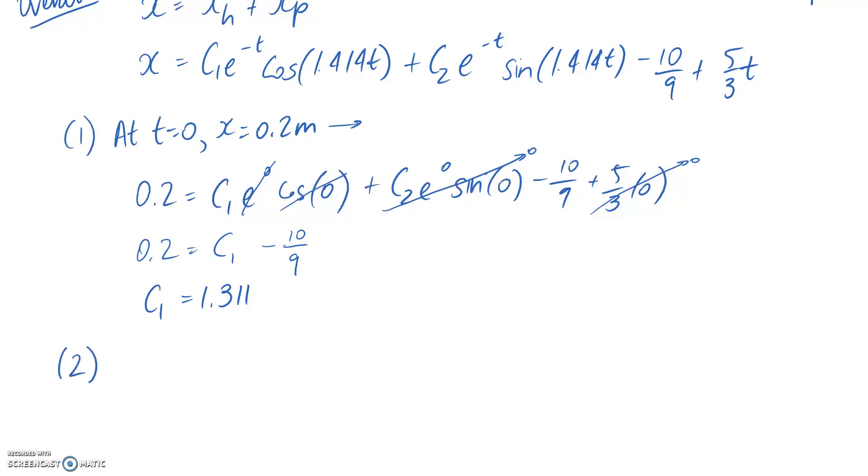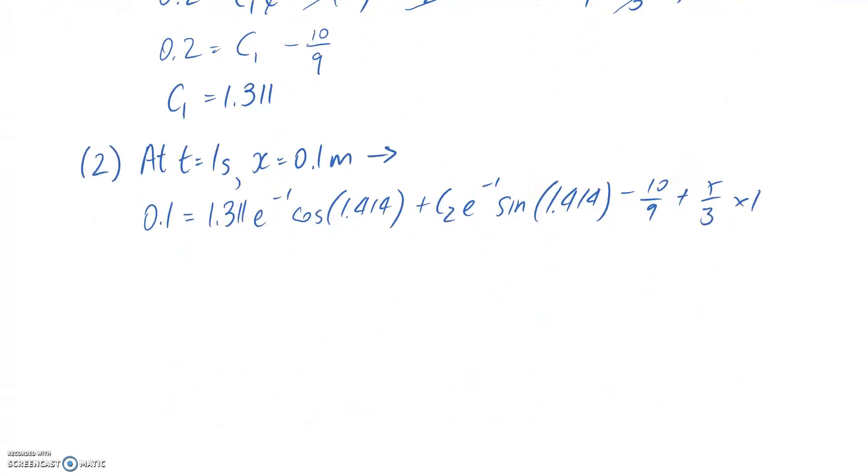And then in order to get our other constant c2, we're going to need to use our second condition. And that was at time is equal to 1 second, our displacement was 0.1 in meters. So again, if we put this information back up into our equation, and this time we know what c1 is, so I'm going to sub it in at the same time. We get that. And now the only unknown that appears in the equation is c2. So if you do 0.1 minus this, plus this, minus this, and then divide that answer by all of this stuff that's stuck on the c2, you end up with c2 falling out to be negative 1.461. So they were the two constants that we needed.